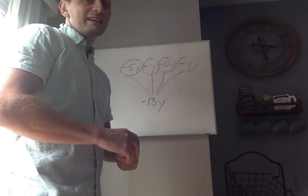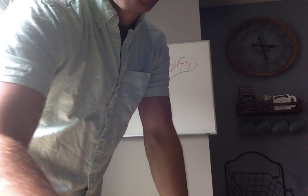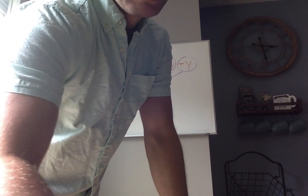The next one says negative 10b plus negative 4b. That's pretty simple. It's going to be negative 14b.